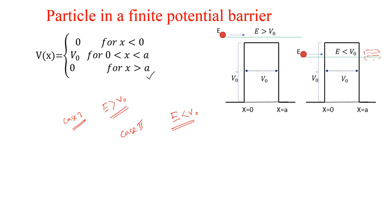We have to solve the Schrödinger equation to find out the wave function, and we have to use the boundary conditions to find the constants — normalization constants — using the same process as for the case E greater than V0. Now we are interested to find all the parameters similarly for E less than V0. So first let's write down the Schrödinger equation.